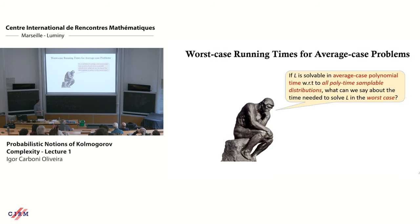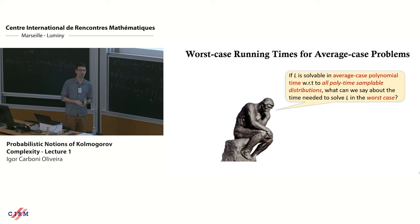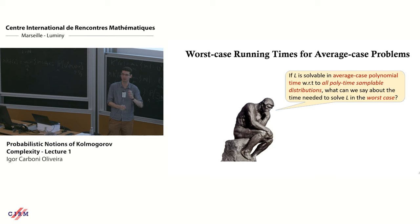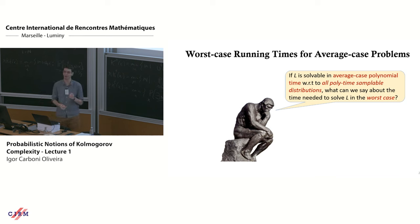If a problem is easy on average for any polynomial-time samplable distribution, can we say something about worst-case complexity? We want worst-case algorithms, but what if we only have an algorithm for every samplable distribution — we can't find hard instances? It turns out that using time-bounded Kolmogorov complexity, you can establish a very interesting link between these two notions.